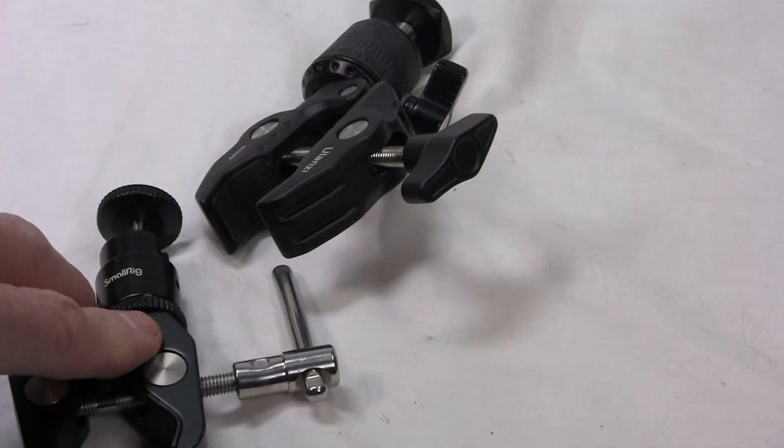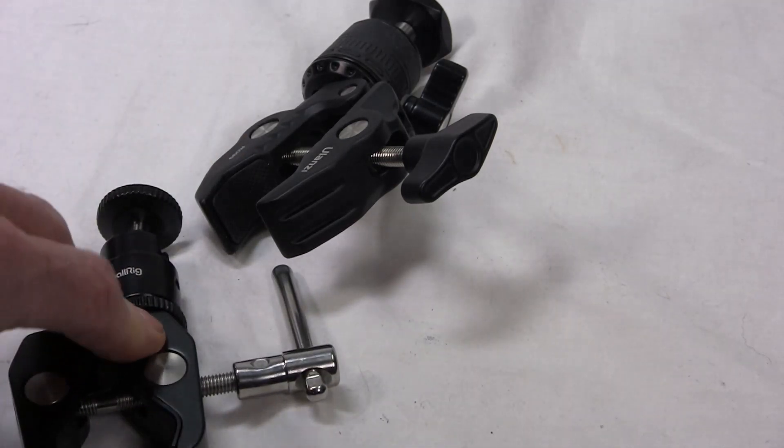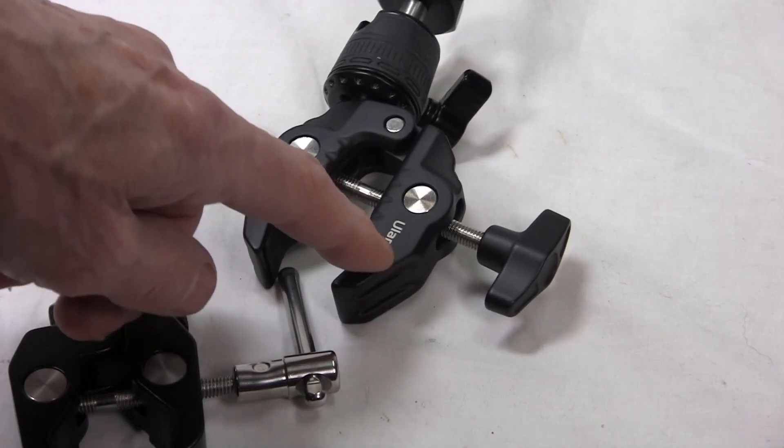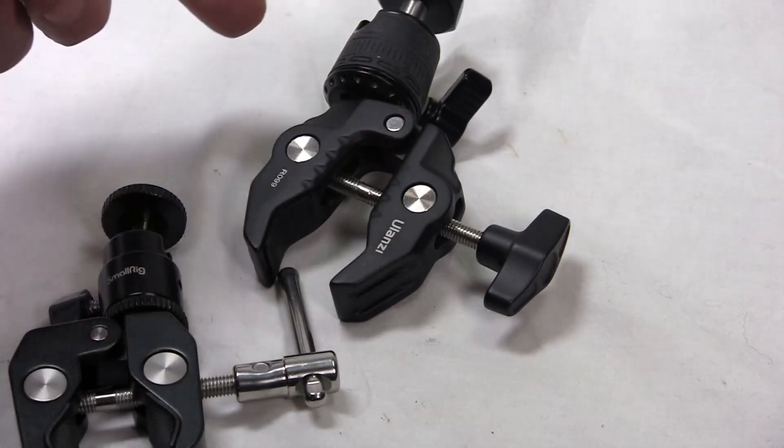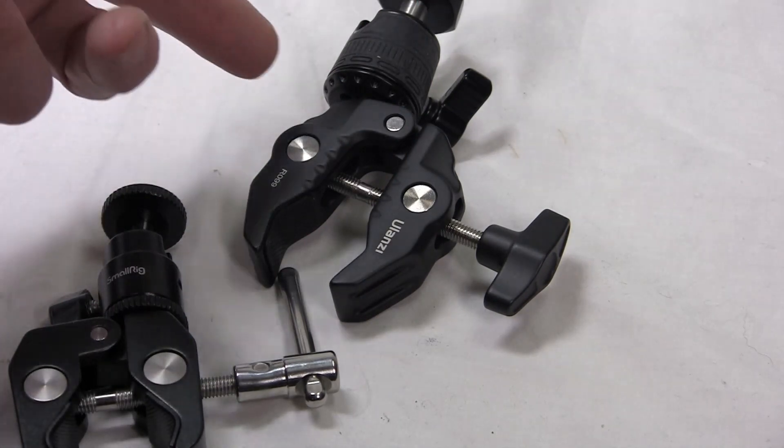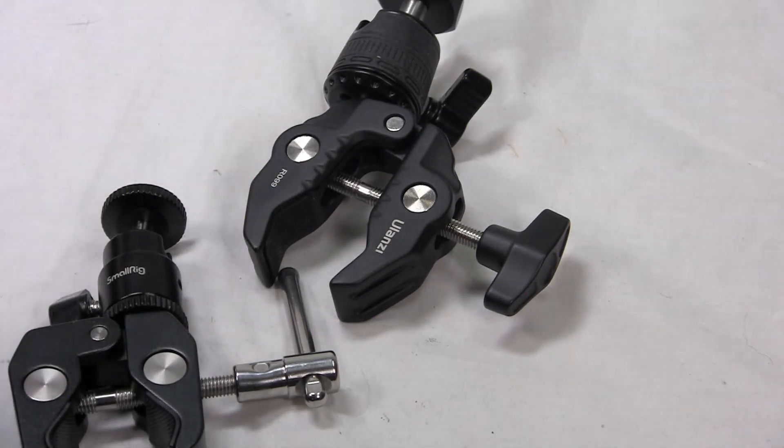I wouldn't bother with the Small Rig. I'd go with the Ulanzi. You save a few dollars, it's going to do a whole lot more for you. They're the same size, about the same weight.